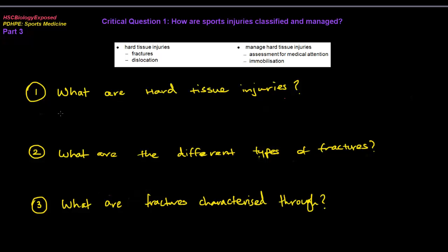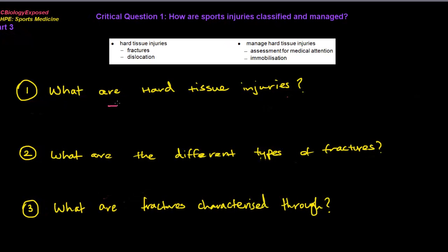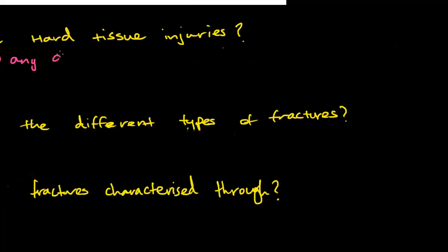So my first question says, what are hard tissue injuries? What you need to remember is a hard tissue injury is any damage to either the bones or the teeth. That is the simplest way I can put it and I think that's the main gist of this entire part. Hard tissue injuries are just any damage done to either the bones or the teeth.